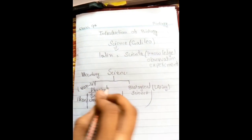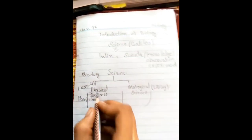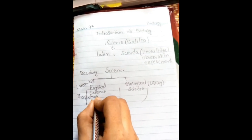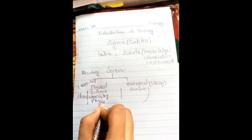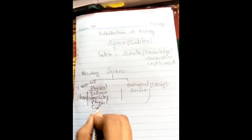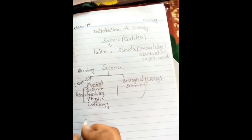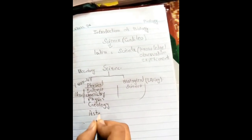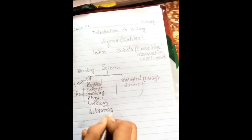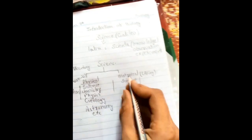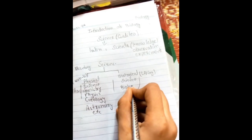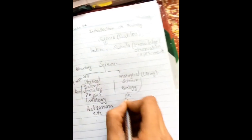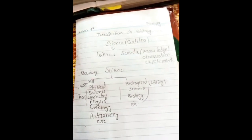The branches of physical science include chemistry, which deals with non-living things, physics, geology, astronomy, and others. The other main division is biology, along with its related branches.